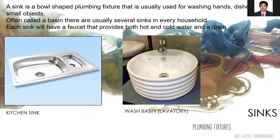A sink, also known by other names including sinker, wash bowl, hand basin, and wash basin, is a bowl-shaped plumbing fixture used for washing, hand washing, dishwashing, and other purposes. Sinks have taps or faucets that may supply hot and cold water, and may include spray features to be used for faster rinsing. They also include a drain to remove used water. This drain may itself include a strainer or a shut-off device and an overflow prevention device.